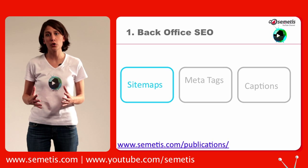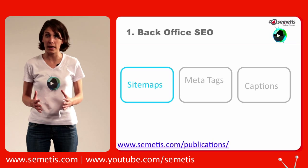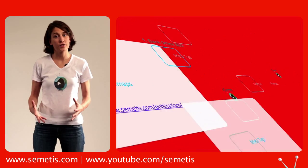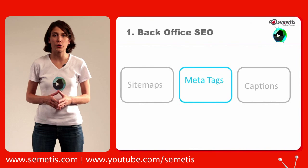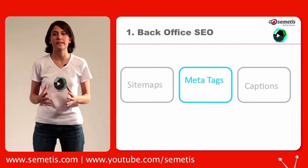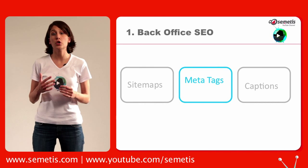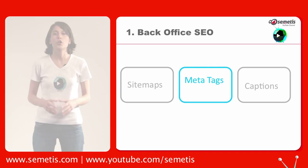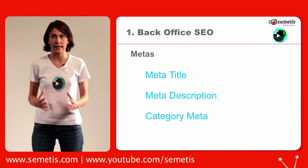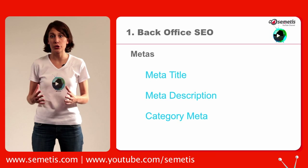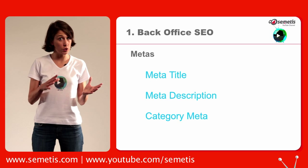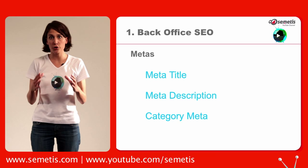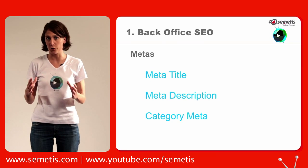If you need more information about how to create your video sitemaps, don't hesitate to go on Semetis' publications. Second, take care of your tags, especially your meta titles — they will help Google index your video content qualitatively. Your meta descriptions are your marketing assets; they will make your viewers choose your video instead of your competitors. Finally, you can also categorize your video with the meta category.